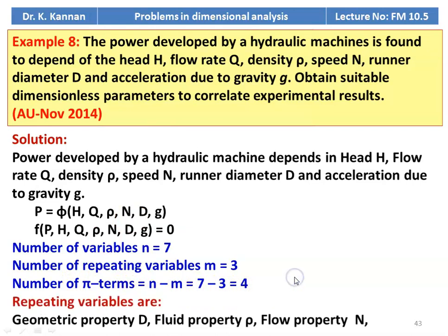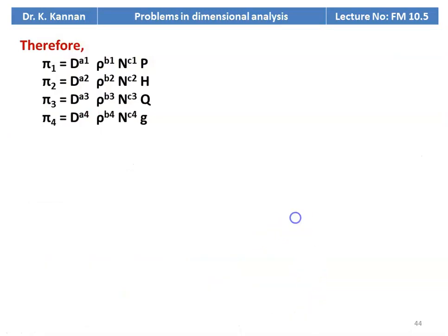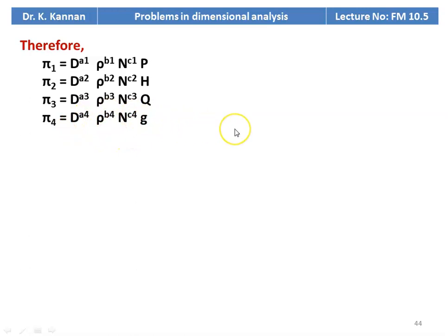There are 4 pi terms. We identify 3 repeating variables: geometric property — diameter d, fluid property — density rho, and flow property — speed n of the machine. The pi terms are: pi1 = d^a1 · rho^b1 · n^c1 · p, pi2 = d^a2 · rho^b2 · n^c2 · h, pi3 = d^a3 · rho^b3 · n^c3 · q, and pi4 = d^a4 · rho^b4 · n^c4 · g.